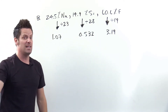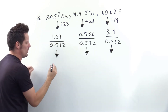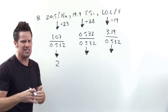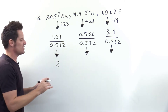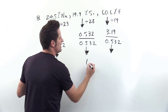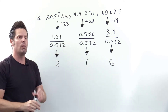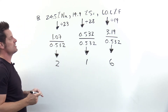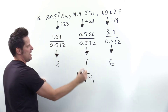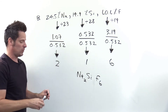Which of these is the smallest? 1.07, 0.532, or 3.19? It's 0.532. So to complete step two, we divide all three of these by 0.532. 1.07 divided by 0.532 is really really close to 2 — there are decimals past that but they're in the hundredths place so you can just ignore them and round to 2. 0.532 divided by itself is obviously 1, and 3.19 divided by 0.532 is really really close to 6. These are all nice neat whole numbers, so they are the subscripts for the empirical formula: Na2SiF6. That is the answer to part B.